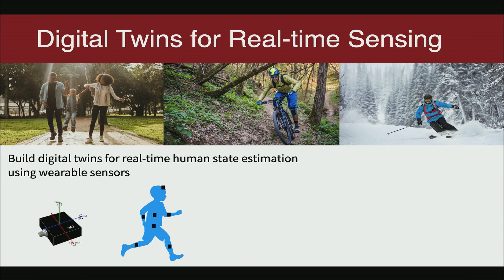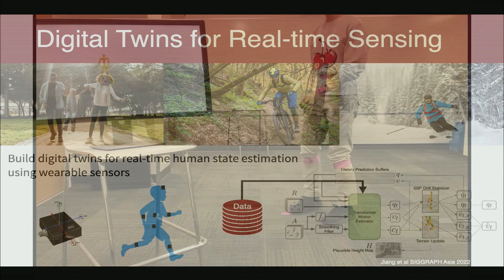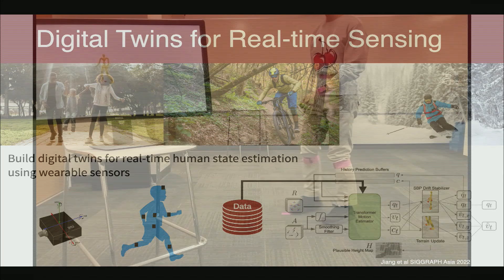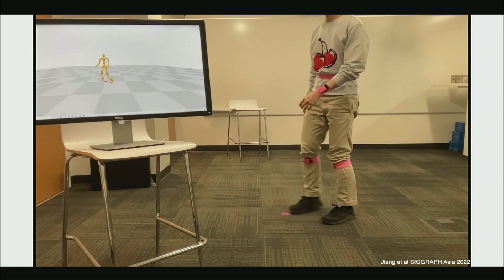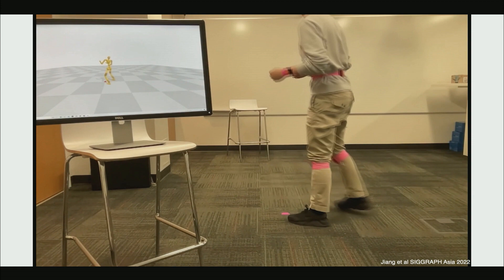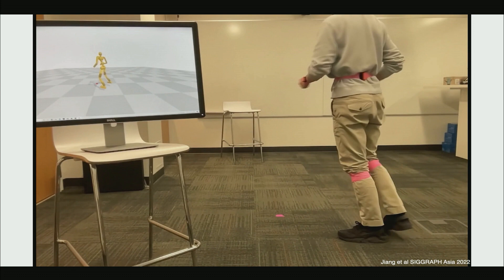Essentially, we want a very cheap, lightweight, self-contained motion capture system that's non-intrusive to daily life. The video shows the digital twin on the monitor following the real person's movements. Even when the person starts doing things completely out of the distribution of the training data, the digital twin can still follow pretty closely.